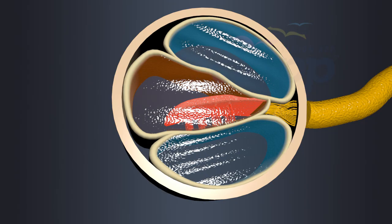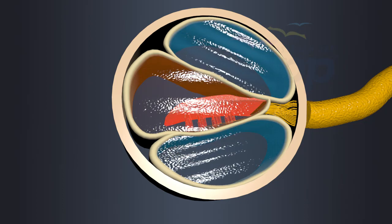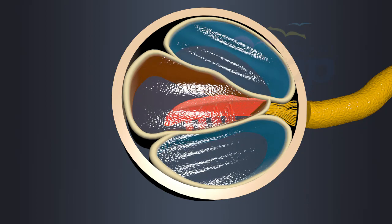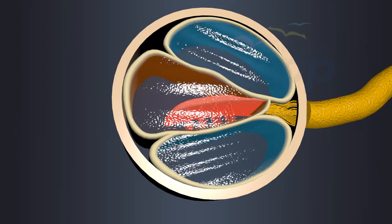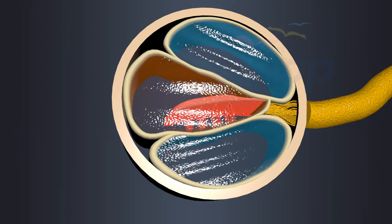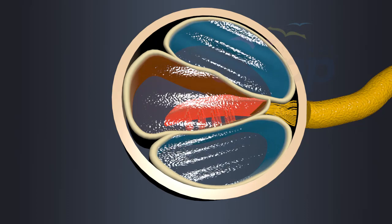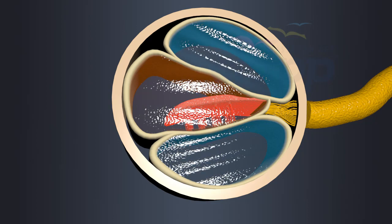The vibrations from the oval window cause ripples in the perilymph of the scala vestibule. These vibrations travel through the scala vestibule and reach the scala media or cochlear duct and cause ripples in endolymph within the cochlear duct.